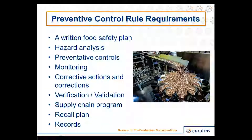Next, the preventive control rule. Unlike GMPs that didn't have to be documented, now we have documentation requirements. We must have a written food safety plan that must include a written hazard analysis. When that hazard analysis defines food safety hazards that require preventive controls, we must define those. Those preventive controls focus around process preventive controls, sanitation preventive controls, and supplier preventive controls. When we have a preventive control in place, we must include documented monitoring, documented corrective actions, and documented verification and validation activities.